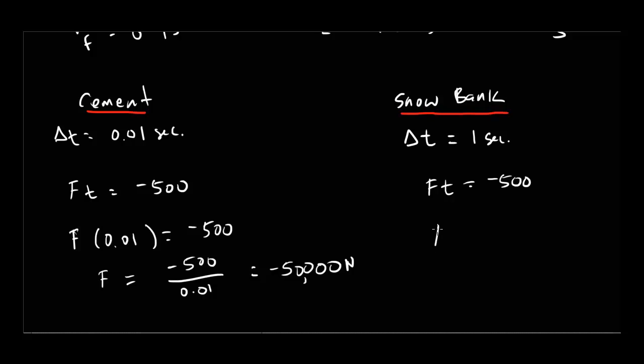Now let's compare it to the snowbank. The force or the time here is one second. So F times one equals negative 500. So what's F? Negative 500 newtons. Very big difference. 500 newtons, that might not feel great. That's a significant force, but it's not likely to hurt me. I'm not likely to suffer any severe damage from a 500 newton force. That's much, much smaller than a 50,000 newton force.